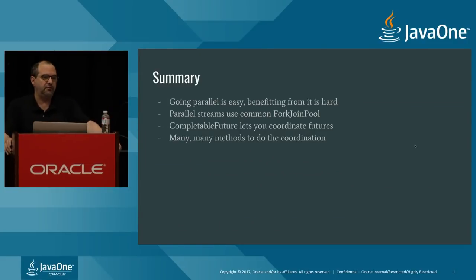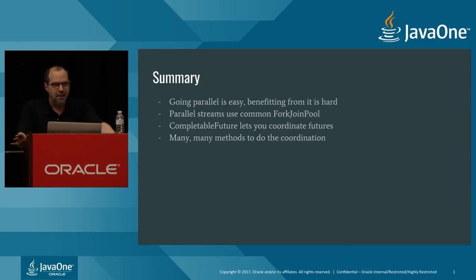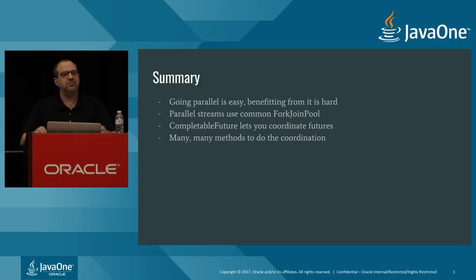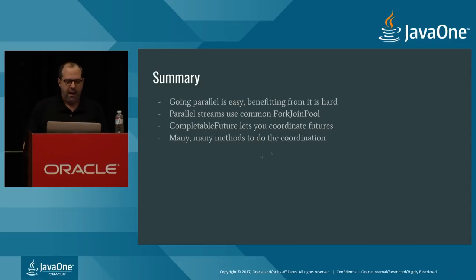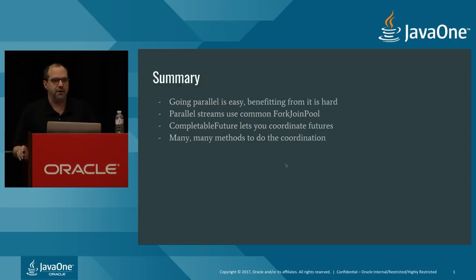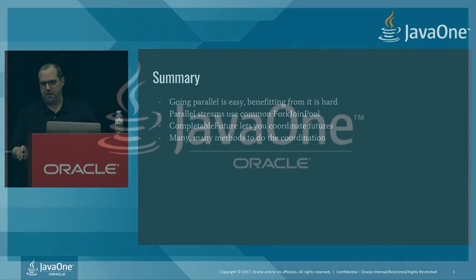To summarize: going parallel is easy, using CompletableFuture is easy, but getting actual benefit out of it is where your time will be spent. Parallel streams delegate to the common ForkJoinPool, but you can change the pool size. CompletableFuture lets you coordinate multiple asynchronous tasks, and there are many methods available for that coordination. Thank you very much for coming.